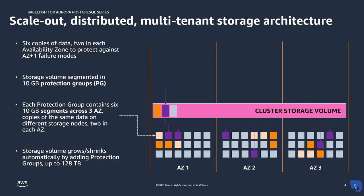The storage volume grows or shrinks automatically by adding these protection groups and it can go up to 128 terabytes. This makes Aurora more durable, scalable, and highly available.